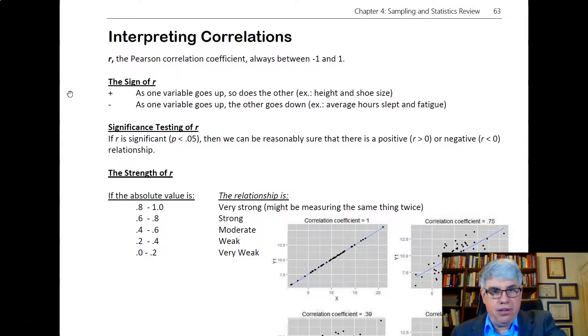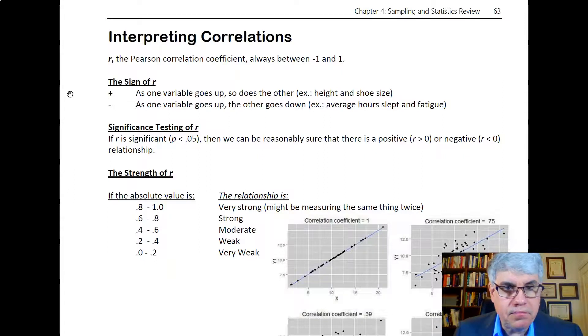When we talk about is r significant, we test the significance of r. We say aha, p is less than 0.05, meaning there's less than a five percent chance that we could get this correlation from the sample if such a correlation did not exist in the population.